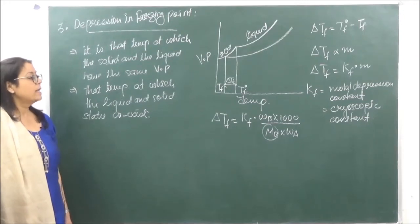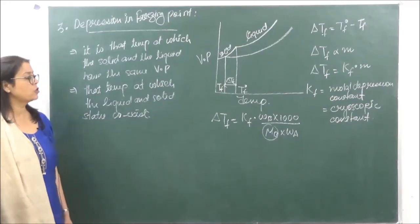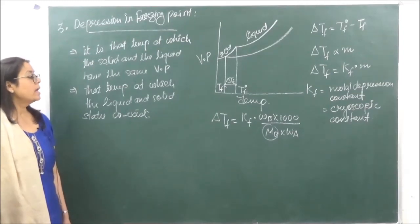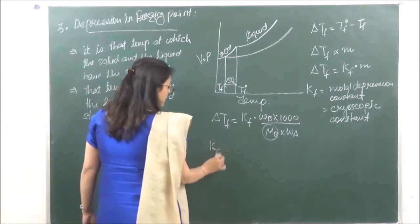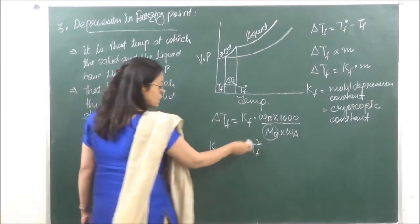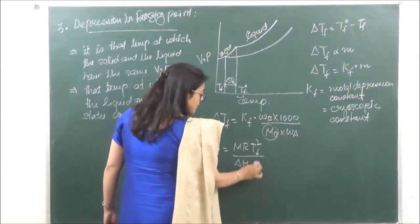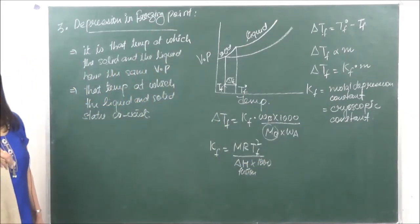Just like Kb, Kf is different for every solvent. If Kf is not given, use: Kf = M × R × Tf² / (delta H fusion × 1000), where Tf is the freezing point of the solvent and delta H fusion is the enthalpy of fusion (instead of vaporization used for Kb).